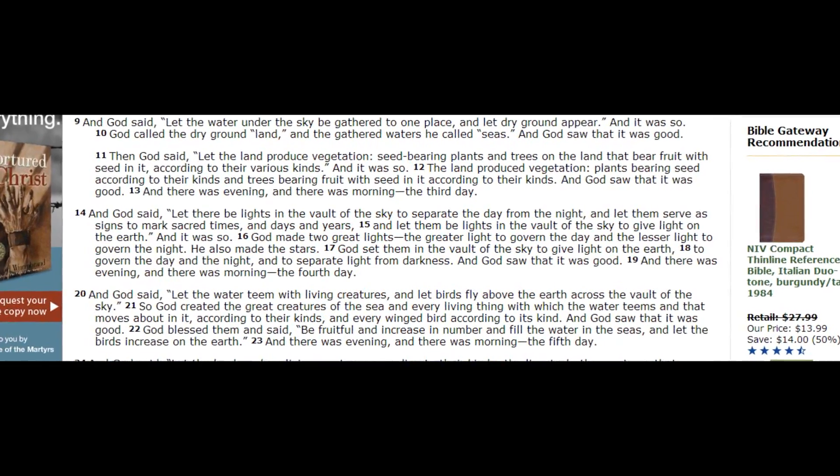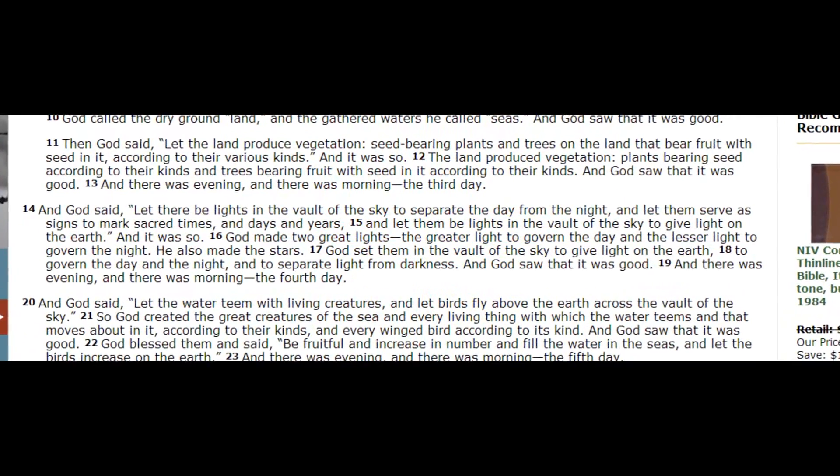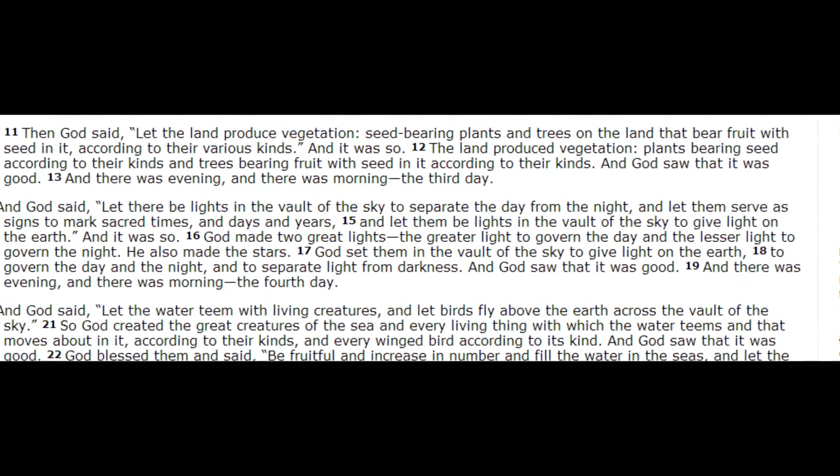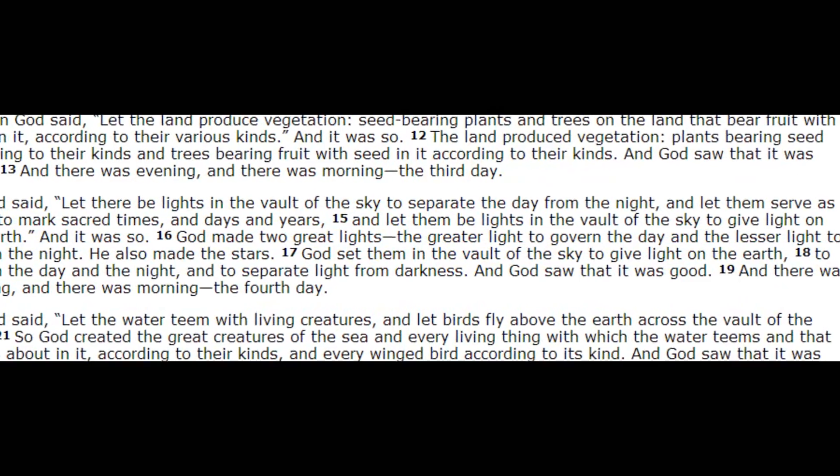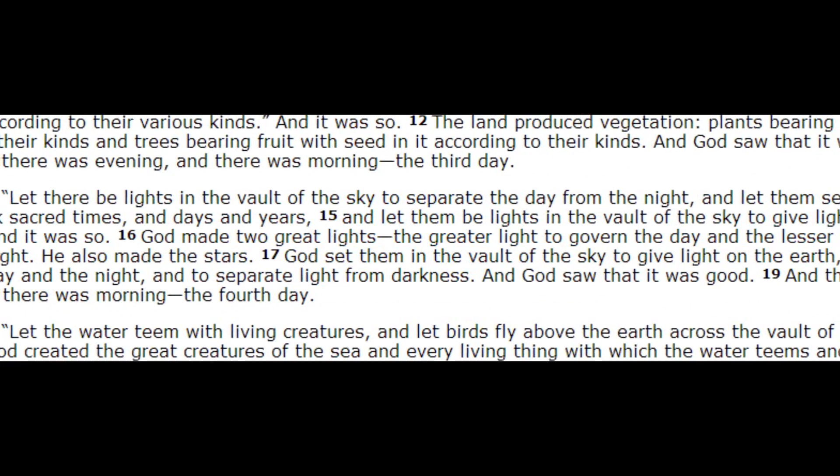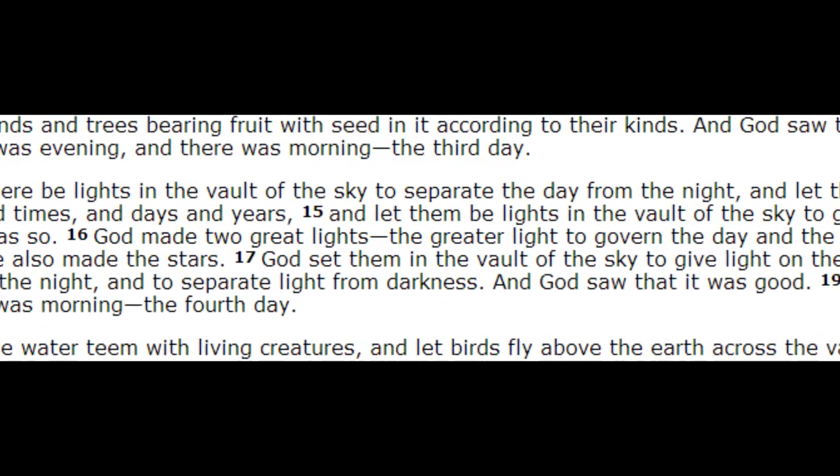A much more commonly discussed problem with Genesis 1 involves time scales. Creationists interpret this chapter to mean that all of the 10 to the 22 stars in the universe were created in 24 hours, just 6,000 years ago.